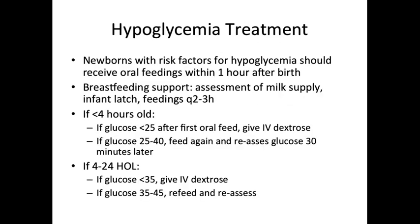Newborns with risk factors for hypoglycemia should receive oral feedings within one hour after birth. Mothers who are breastfeeding should be seen by lactation consultants to determine the amount of milk supply and to assess latch. If an infant is less than 4 hours old and has a confirmed hypoglycemia less than 25, the infant should be given IV dextrose. If the glucose is between 25 to 40, the infant may feed and the glucose should be reassessed 30 minutes later.